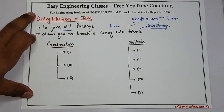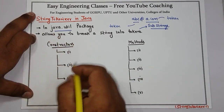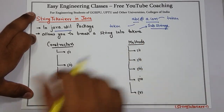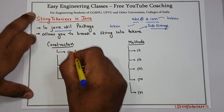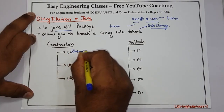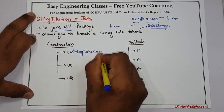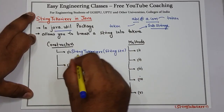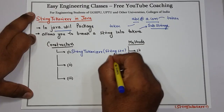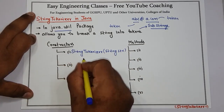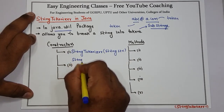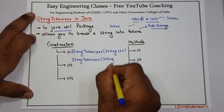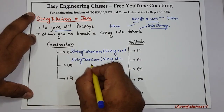There are different constructors to initialize or create an object of the StringTokenizer class. I will write all three constructors one by one, then we will see the different methods and a simple example. The first constructor is simply StringTokenizer with the parameter String str — it creates a StringTokenizer with the specified string. The second constructor takes String str as the first parameter and String delim as the second parameter.